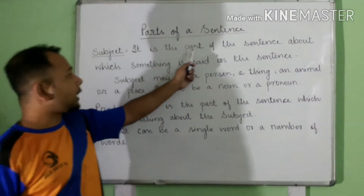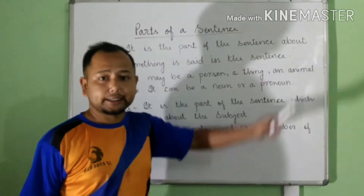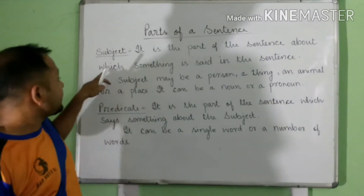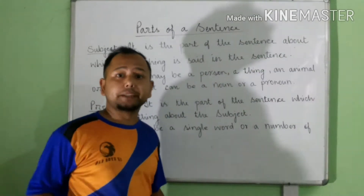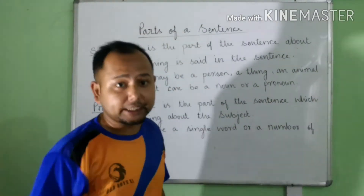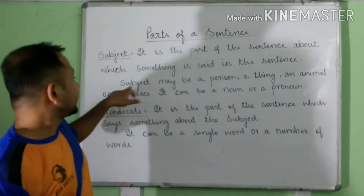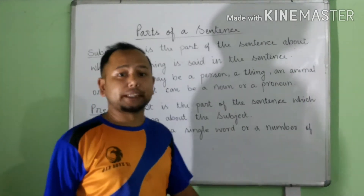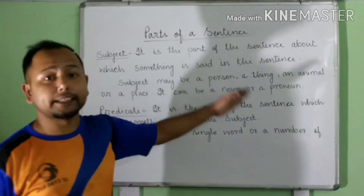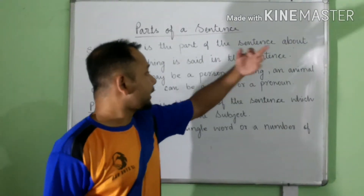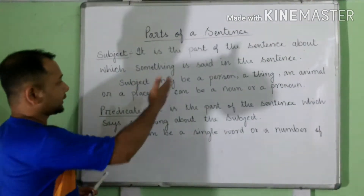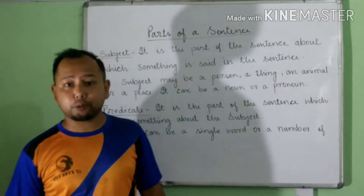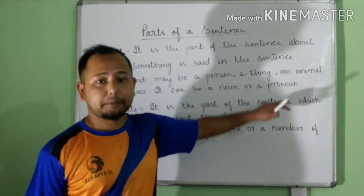Subject is the part of the sentence about which something is said in the sentence. It may be a person, thing, animal, or place. Subject can be a noun or a pronoun.